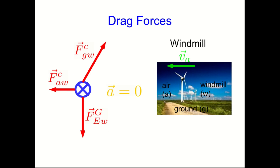Which tells you that the force that the ground is exerting on the windmill needs to have a significant horizontal component. Otherwise the windmill blows away or blows over.